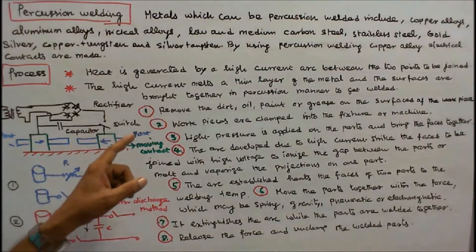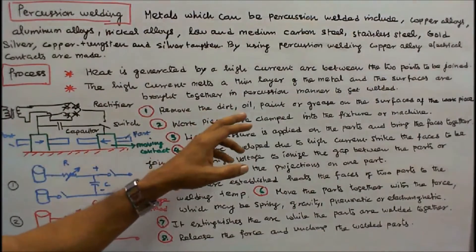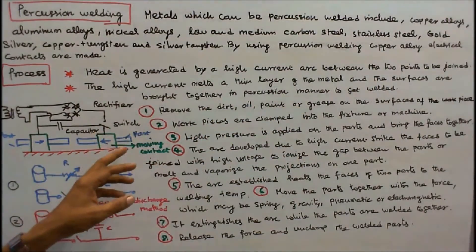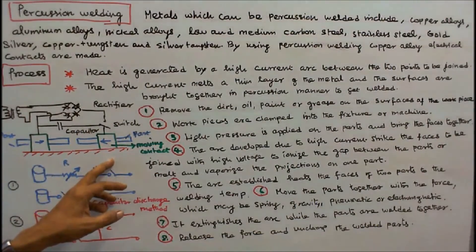Point number one: remove the dirt, oil, paint or grease on the surfaces of the work piece. Number two: work pieces are clamped into the fixture or machine. Number three: light pressure is applied on the parts and bring their faces together.